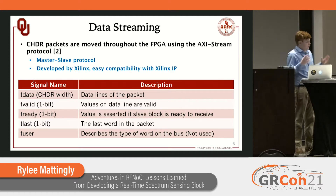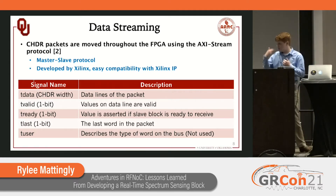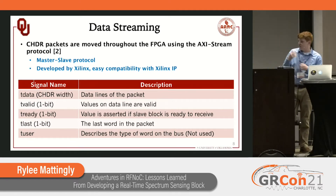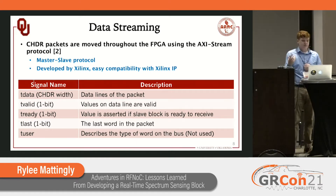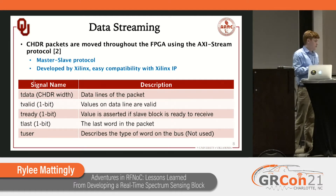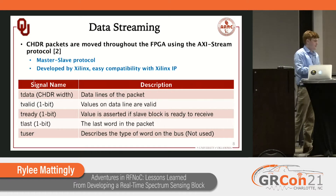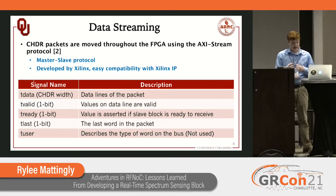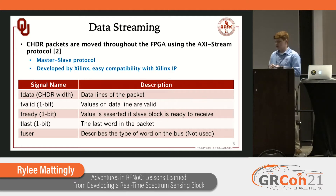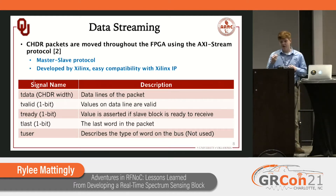This stream has a few signals of interest: we have our data bus where data is coming in, a valid bit that tells us if the current word is valid, a ready bit from the recipient block indicating it's ready to receive data, and a TLAST to indicate the last word in a packet. There's an additional signal called tuser that describes what kind of word is on the bus, which will be important later.